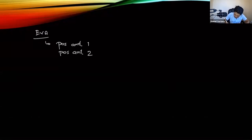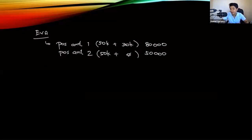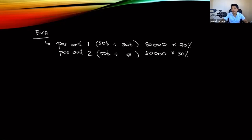We have two possible amounts. Possible amount one is 50,000 plus the 30,000 bonus — assuming the bonus is received — which equals 80,000 pesos. Possible amount two assumes the condition is not met and the bonus is not received, so the amount expected from the client is only 50,000 pesos. The client estimated a 70% chance of achieving the target, so the other outcome has a 30% chance.